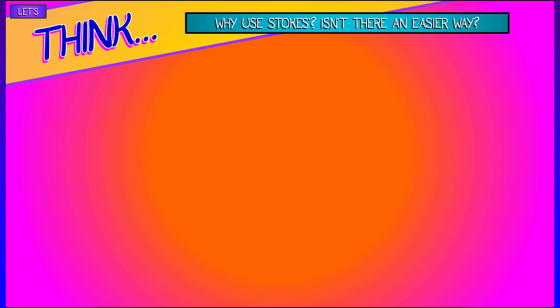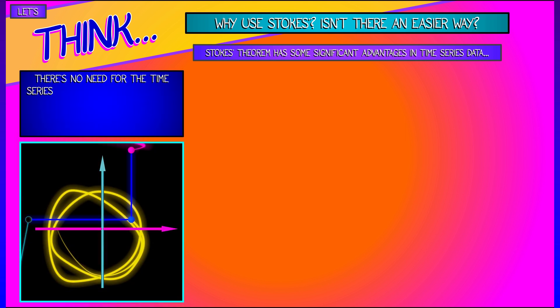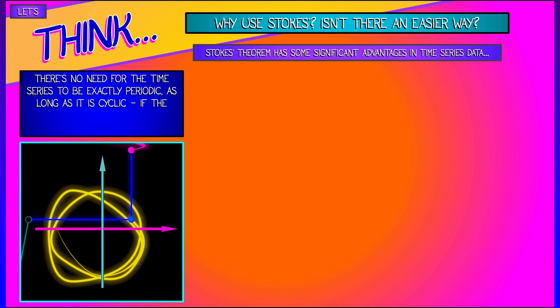Okay, but I think that there's a lot more that we can do, a lot more that we need to think about. So let's think, why are we using Stokes' theorem? Isn't there an easier way to get at this data? Well, I think that Stokes' theorem has some real advantages when working with this data structure.